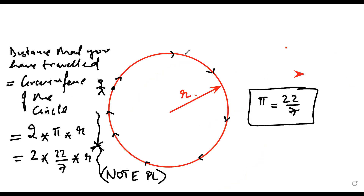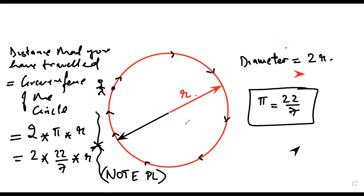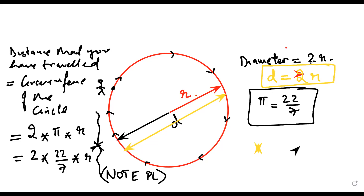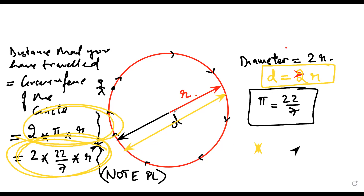Another thing to note is that the diameter of a circle is twice the radius. Diameter is usually represented by d, so another formula is: d is equal to 2r. The value of π is taken as 22 by 7. The circumference formula is 2πr, usually with π equal to 22 by 7. Another formula to remember: diameter is twice the radius.